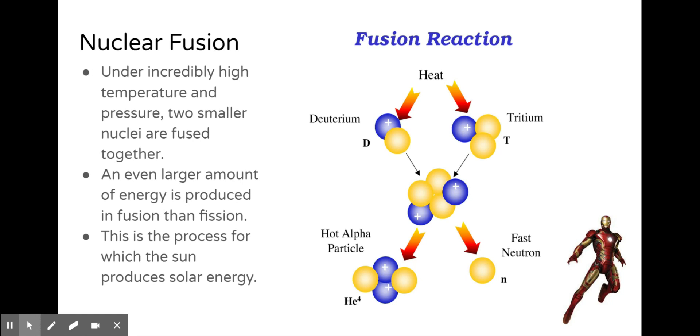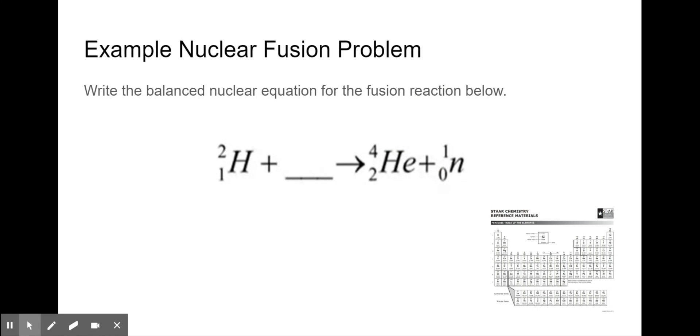This is also what is on Iron Man's chest. He has a fusion reactor on his chest. Write the balanced nuclear equation for the fusion reaction below. So just like in all of our previous nuclear equations, I have to make sure that my subatomic particles are equal on both sides. So I have four plus one, which gives me a total of five. I already have two on the reactant side. So this must be a three because three plus two is five.